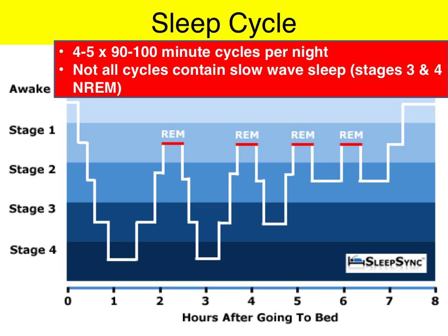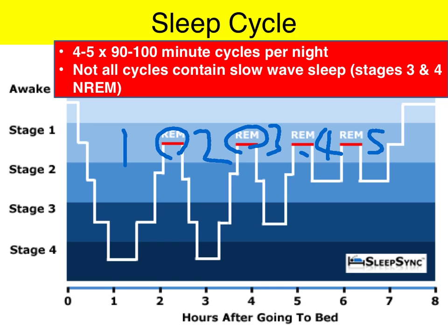So the sleep cycle. Here we have the typical sleep cycle for an adolescent. Note there's about 4 or 5 sleep cycles, each with non-REM and then some REM. Importantly, it's only in those first couple of cycles that we have that deep, slow-wave non-REM sleep — stage 3 and 4.